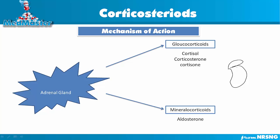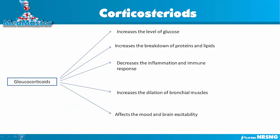The adrenal gland secretes two types of hormones. The first one is glucocorticoids and the second one is called mineralocorticoids. Glucocorticoids include three hormones released: cortisol, corticosterone, and cortisone. While the mineralocorticoid is aldosterone. What is the function of each? Let's take a look.